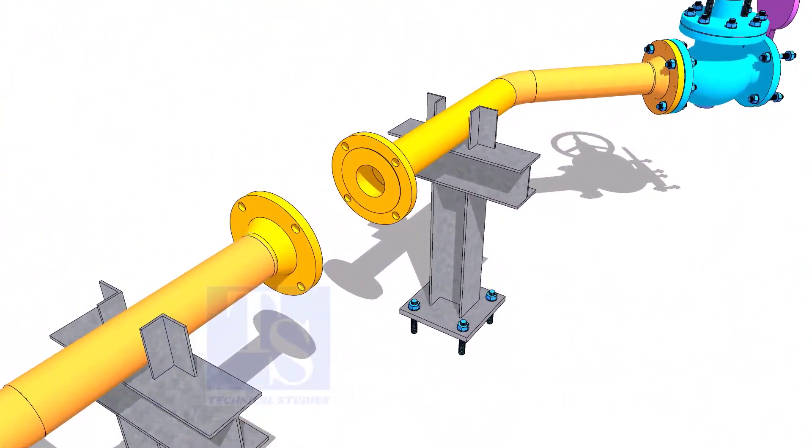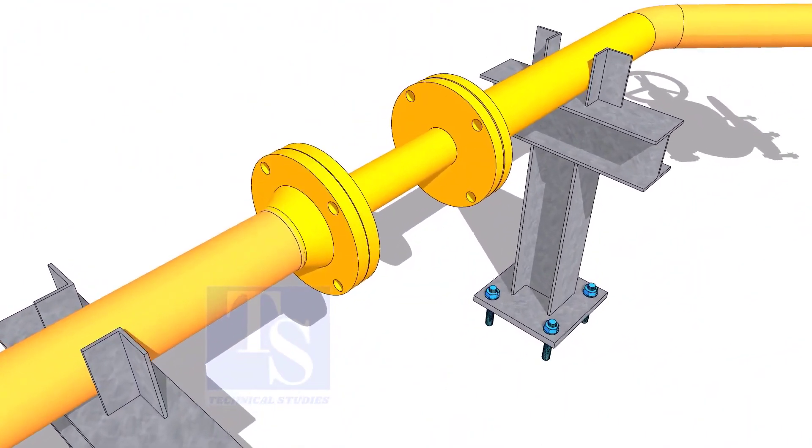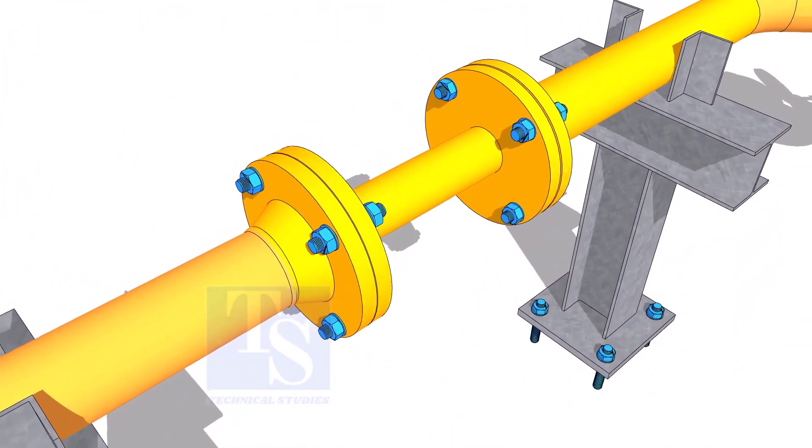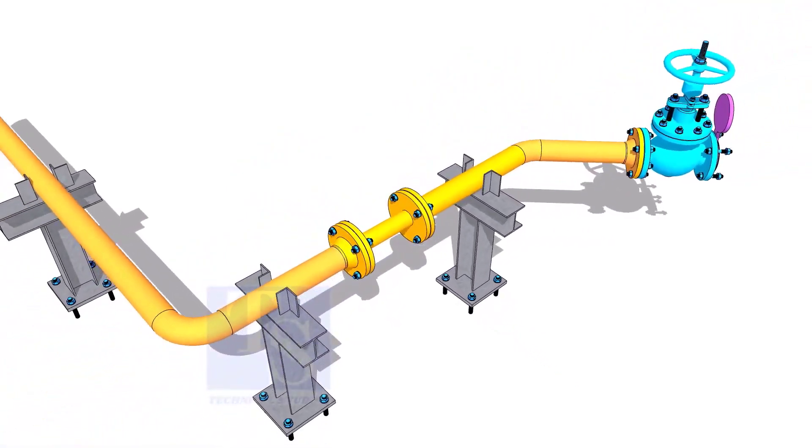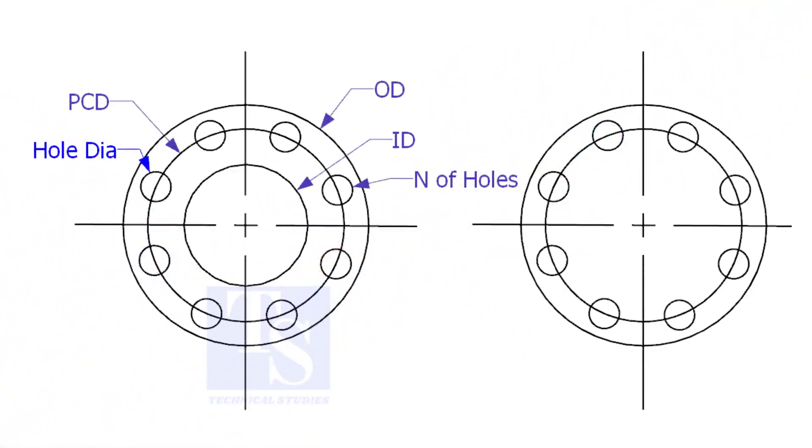Other use of plate flange is making temporary spools to replace valves and equipment on a piping system. To make a plate flange, there are two types of plate flanges: open and blind.